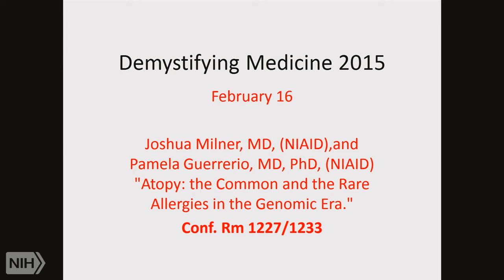Josh Milner is chief of the genetics and pathogenesis of allergy section in the laboratory of allergic diseases in the NIAID. He's a graduate of the Albert Einstein College of Medicine — my home turf for 30 years, so he's a prize graduate. Josh is a leading immunologist whose attention has been directed toward trying to understand sometimes rare disorders of allergy and atopy at the genetic and genomic level, and mechanistically, what do those genes do? Is all of this T cell business? Is IgE the common denominator for all kinds of allergic things? Josh is going to begin and discuss that.